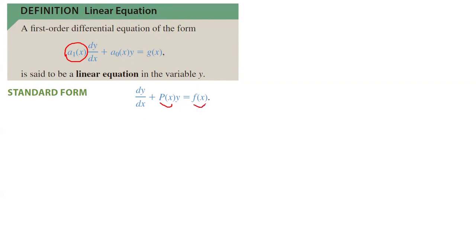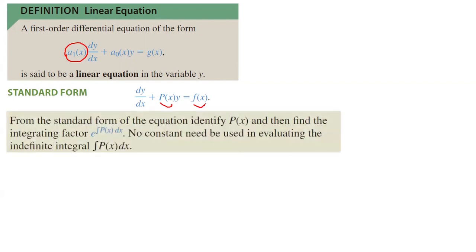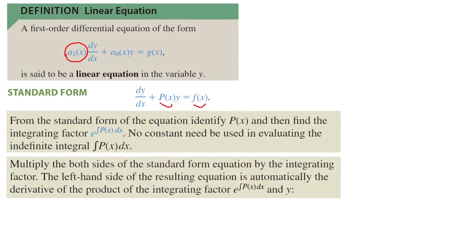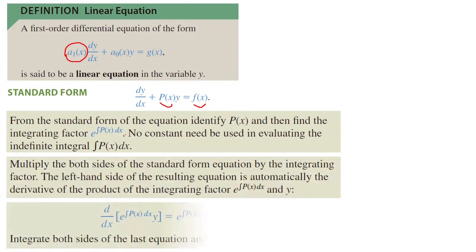Now that you have the standard form, you can find the integrating factor, which is the exponential function e to the integral of p(x) dx. After finding the integrating factor, multiply everything by it to create d/dx of [integrating factor times y], which comes from the product rule using calculus. On the right-hand side you have the integrating factor times f(x). Then integrate both sides, simplify as much as you can, and isolate y.